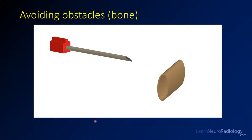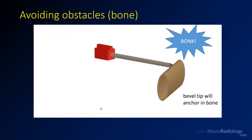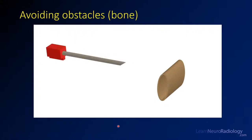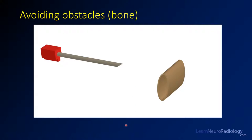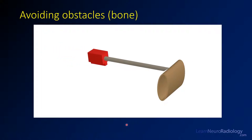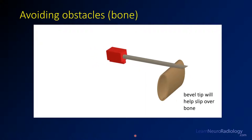You can also use the bevel to avoid obstacles. Imagine the lamina as a bone in the path of your needle — if you hit it with the bevel in one position, it anchors in the bone and you can't get past. Pull back a little, rotate the needle 180 degrees so the bevel faces the object you're trying to avoid, then advance — the bevel allows the needle to slip right over the top of the bone and past it. It's a nice way to navigate around an obstacle.